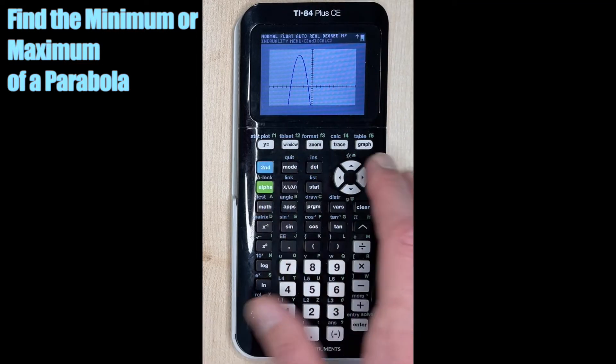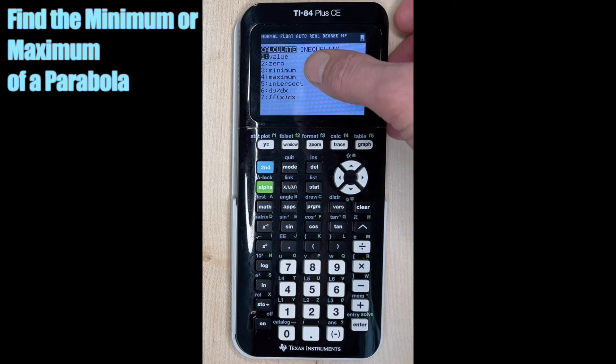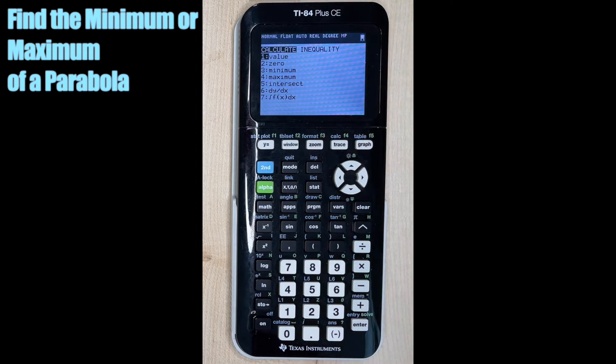So we're going to hit second and then trace because we want to calculate. And notice here we see minimum for number three and maximum for number four. So essentially these give us the same thing, but it just depends on if our parabola is opening up or down.